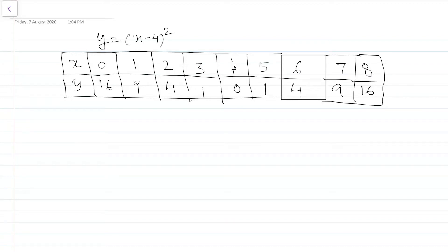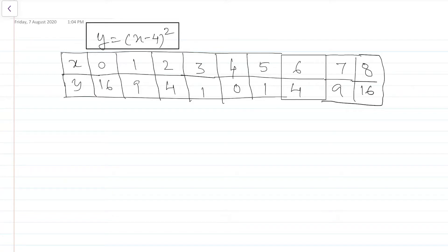Consider the function y = (x - 4)². This is the table for this graph. When x is 0, y is 16. When x is 1, y is 9. When x is 2, y is 4. When x is 3, y is 1. And when x is 4, y is 0. It means that in the interval 0 to 4, the function is decreasing.